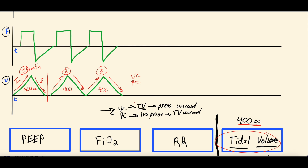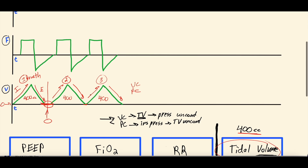The volume scalar looks similar between volume control and pressure control — the shape, inspiration up and expiration down, is about the same. The volume goes up when they inspire, down when they expire, hopefully returning to zero because you breathe out all the air you breathed in. Between breaths, volume sits at zero. This repeats for each breath cycle.